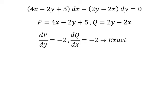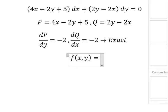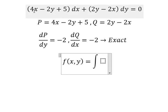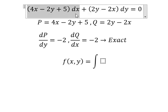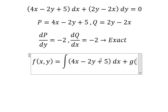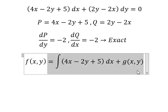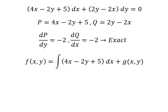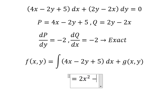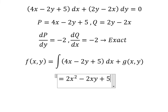Next, I need to set up the function f(x,y). f(x,y) equals to the integration, so I will choose this one plus 3xy. The integration of 4s gives 2s. The integration of 2y gives negative 2sy. The integration of number 5 gives 5s.